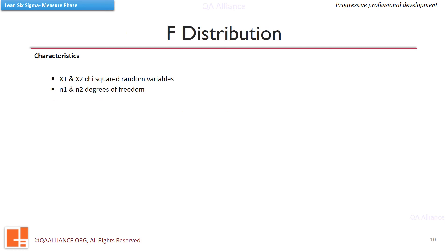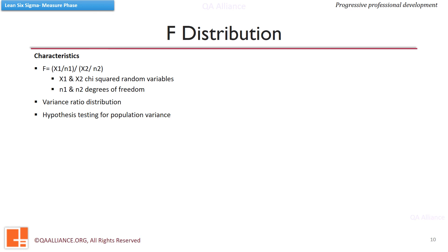If X1 and X2 are chi-squared random variables with N1 and N2 degrees of freedom, then the distribution of the random variable F is represented by this equation. It is also called the variance ratio distribution. It is used in hypothesis testing to test whether two samples have come from populations having the same variance. ANOVA also uses this distribution. We will cover more about these distributions later while discussing hypothesis testing.